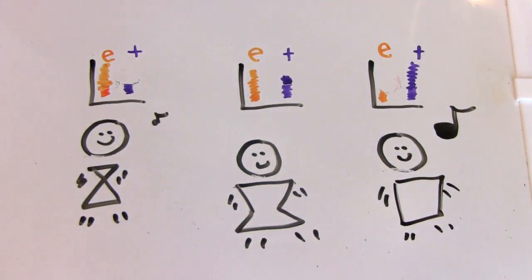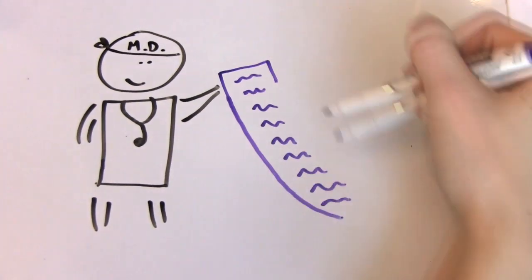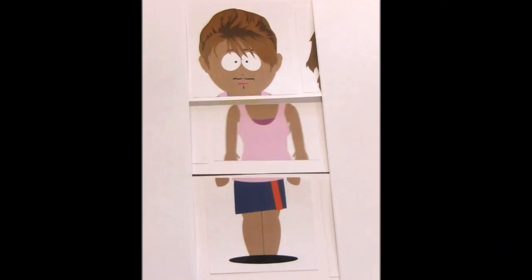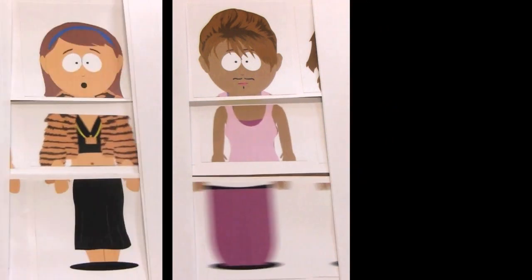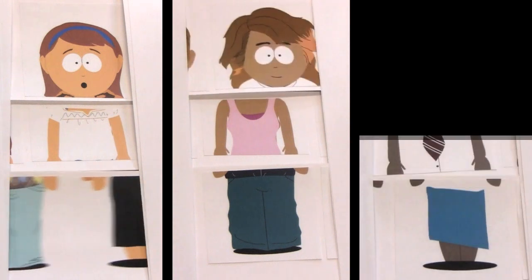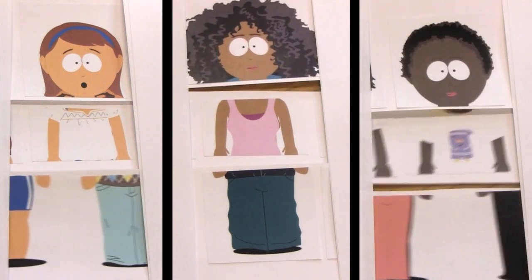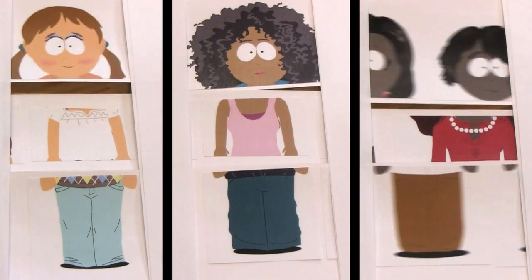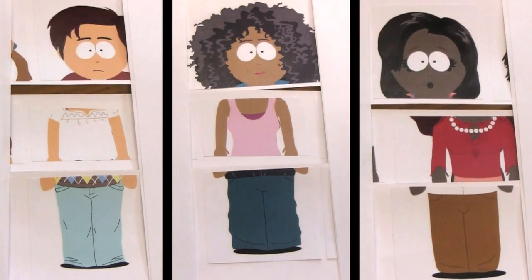Some people also get surgery to alter their bodies. There are many different kinds of surgeries available for people who have the money and support to get them. Some reconstruct chests to make them look more masculine or more feminine. Some construct a front innie where an outie was. Some release a clit from some of the anatomy surrounding it so it looks bigger. Some create a big outie where a front innie was. And there are a lot more.